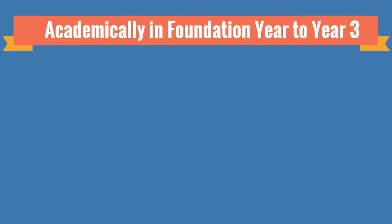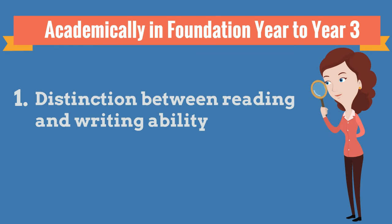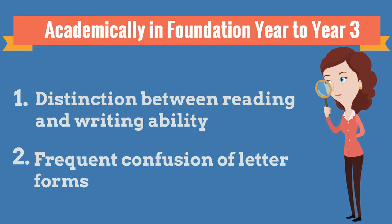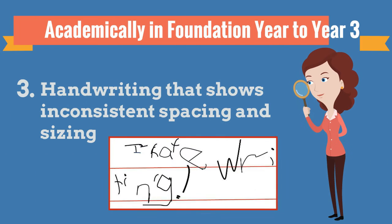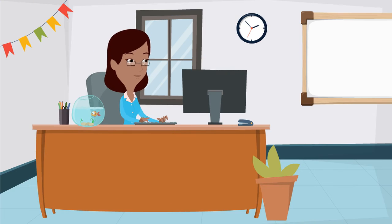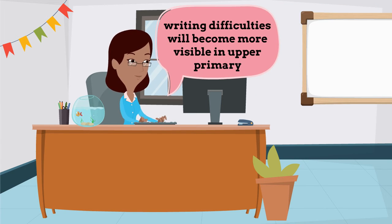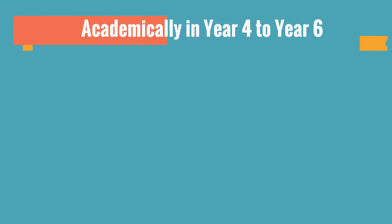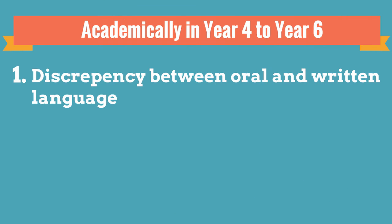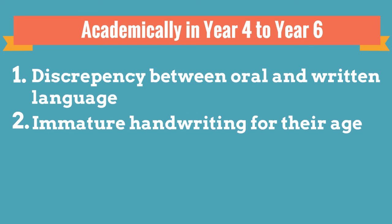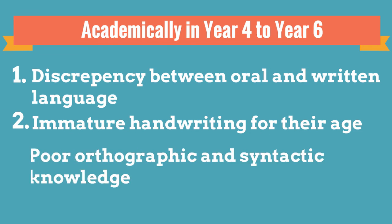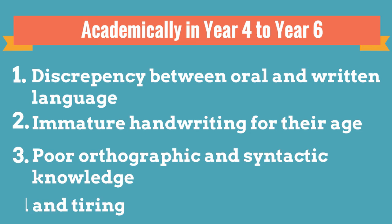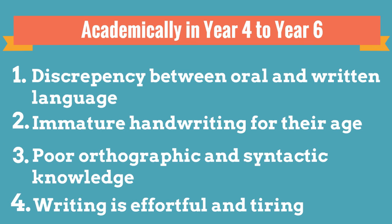Academically, in lower primary, you may see a distinction between adequate reading proficiency and writing ability, frequent confusion of letter forms, and handwriting that shows inconsistent spacing and sizing of letters and words. In upper primary, writing difficulties will become more visible as demands on writing increase. You may see a substantial discrepancy between oral and written language, immature handwriting, poor orthographic and syntactic knowledge, and the process of writing for students is very effortful and tiring.